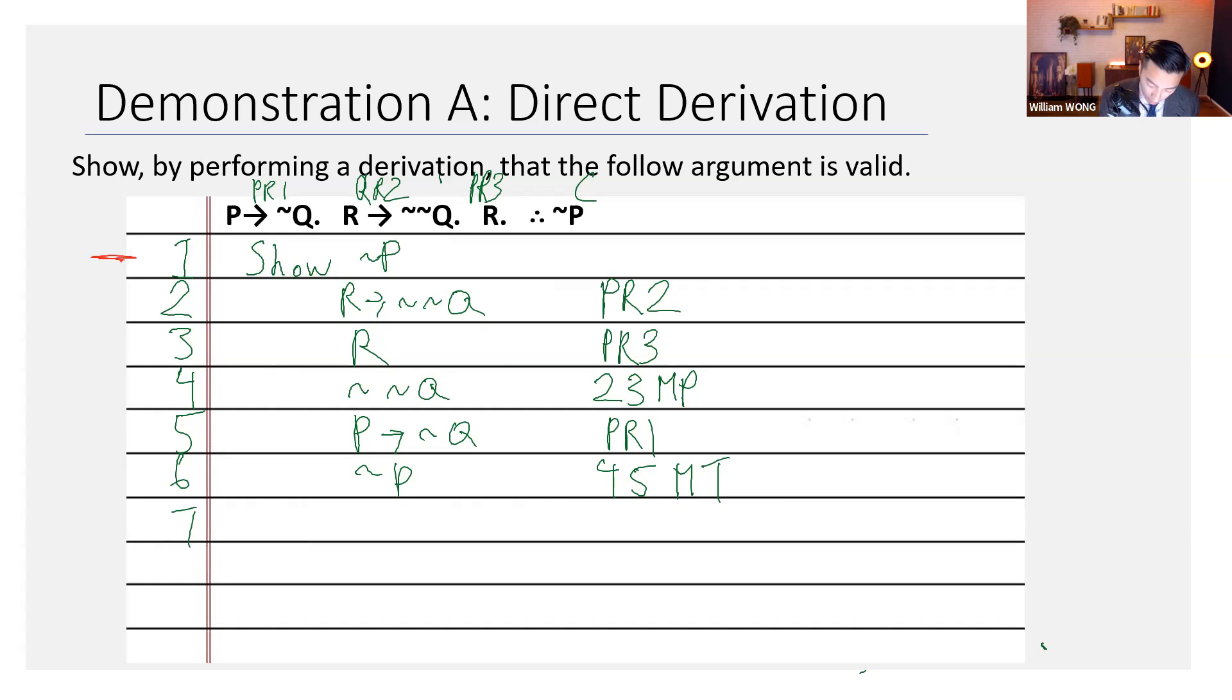Line six has given us not P. To finish it off, we should write six, citing line six, that is, and writing DD. DD stands for direct derivation. And this signals that you've completed the derivation to show line one. That is not P.